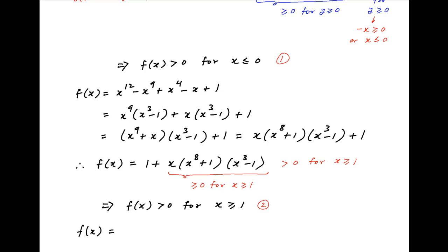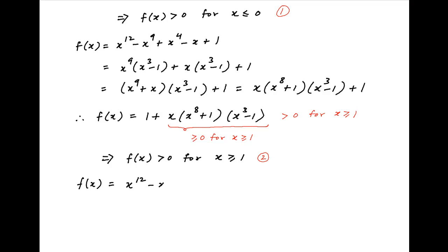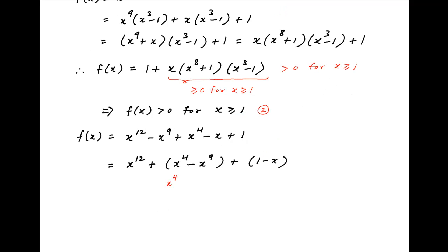Once again, f(x) equals x raised to the power 12 minus x raised to the power 9 plus x raised to the power 4 minus x plus 1. This can be written as x raised to the power 12 plus x raised to the power 4 minus x raised to the power 9 plus 1 minus x. Notice that x raised to the power 4 is strictly greater than x raised to the power 9 when x is greater than 0 and less than 1. Therefore, the middle term (x⁴ minus x⁹) is strictly greater than 0, and the last term (1 minus x) is also greater than 0, when x is between 0 and 1.